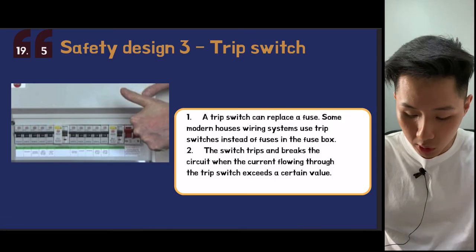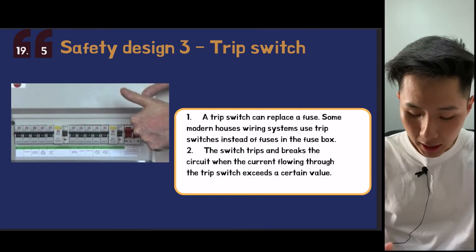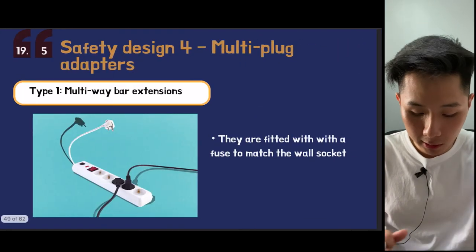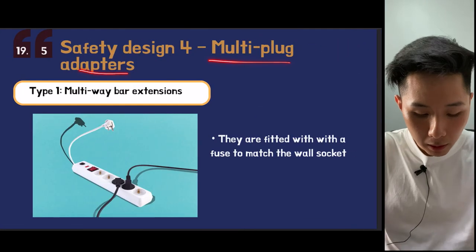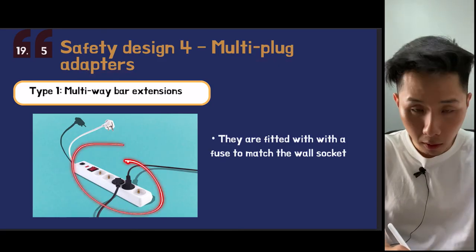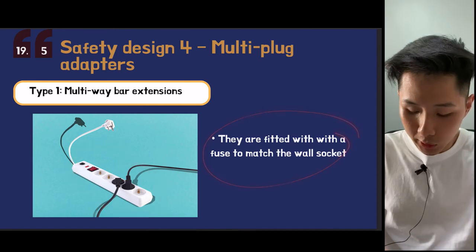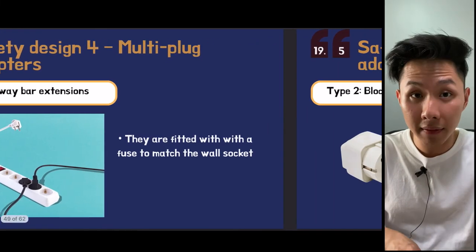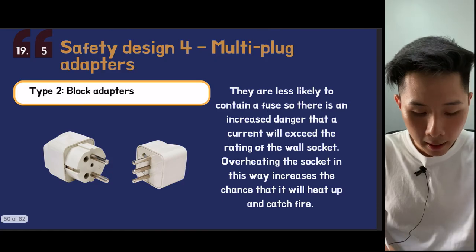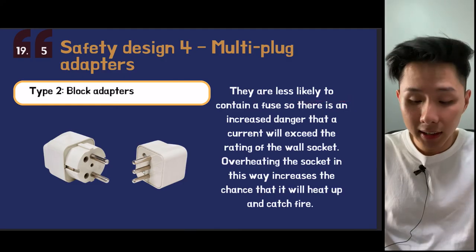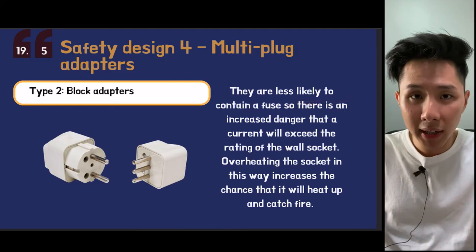A trip switch can replace a fuse — it breaks the circuit when current is too large and can be reset. Multi-plug adapters are fitted with a fuse matching the wall socket, so if current overflows it melts and stops current flow. Block adapters allow multiple devices to be plugged in and may or may not contain a fuse, so check carefully before using them.